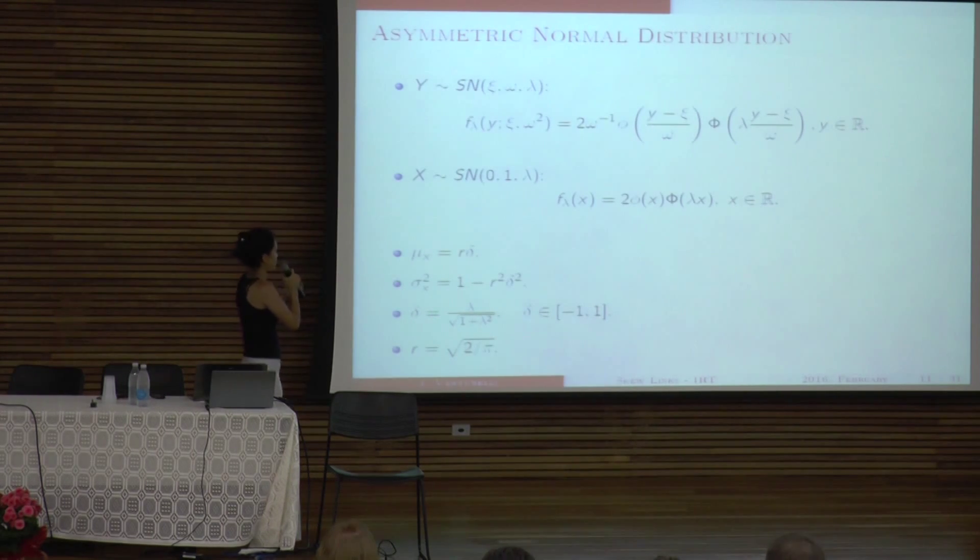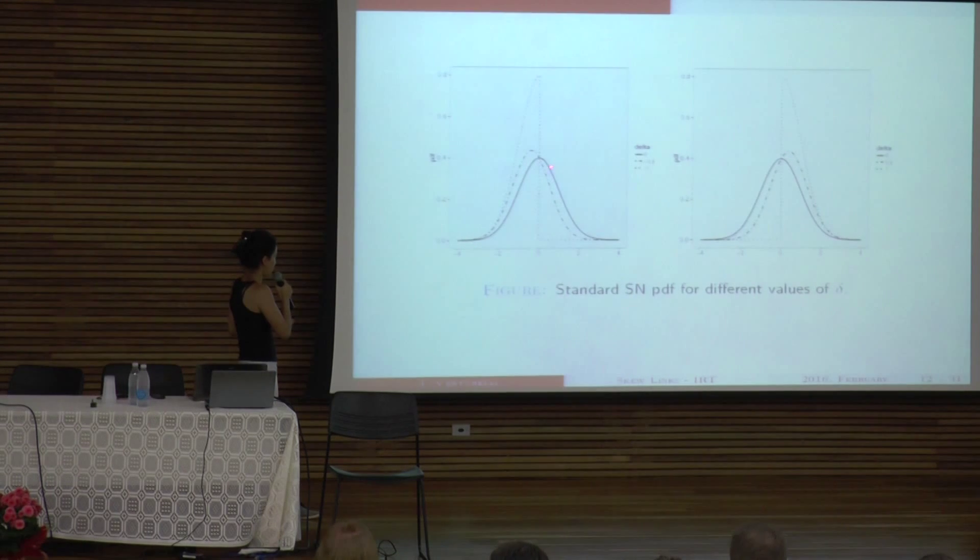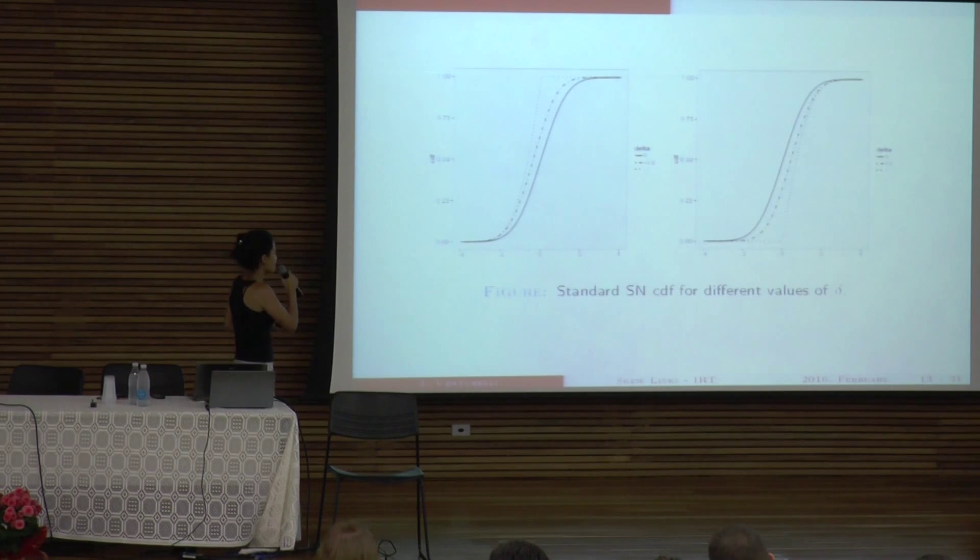This is just how the asymmetric normal distribution looks like. And here, lambda is the asymmetric parameter. I won't go through this. And this is how an asymmetric density would look like. The solid line is the case where the parameter, the skew parameter is zero. And this is a very extreme case of skewedness. And this is how the skew parameter would affect the item characteristic curve.